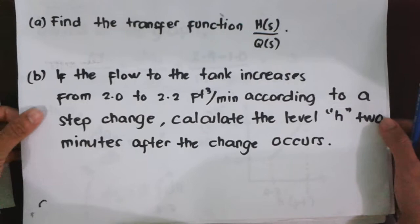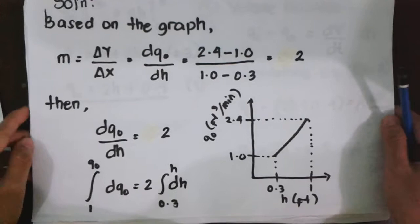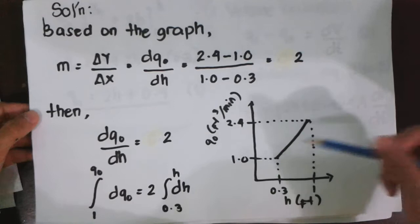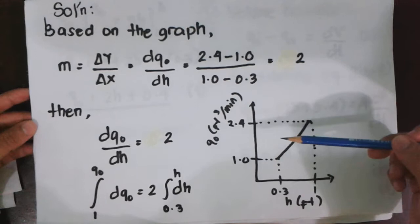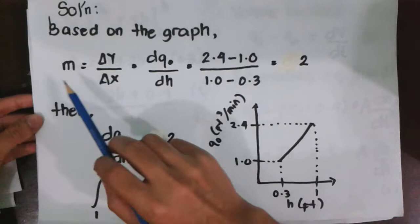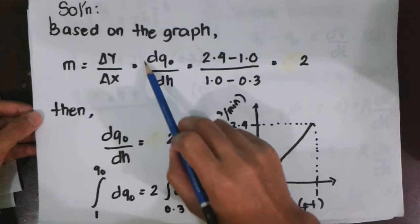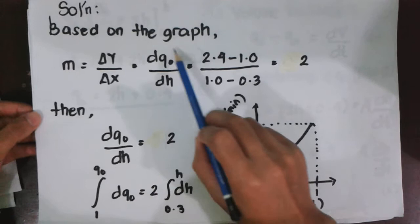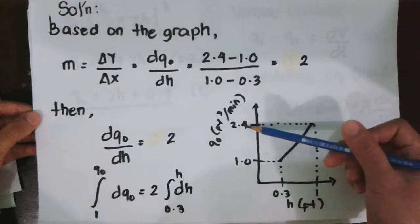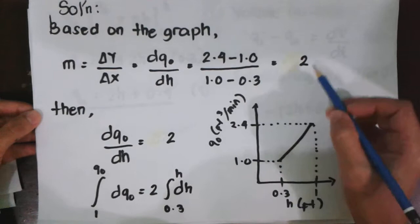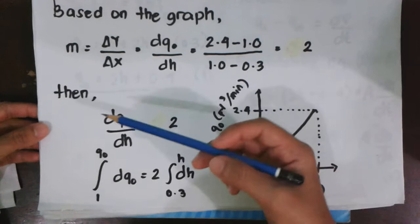Now, in solving this problem, we based on the data given in the graph. From the data given, we can arrive at an equation showing the linear relationship between the outlet flow to the level H. By getting the slope, we have M, which is the notation of slope, equals to the change in Y over change in X, which is equivalent to the change in the outflow rate with respect to the change of its level. Using these values, we can calculate the slope, which is equivalent to 2.